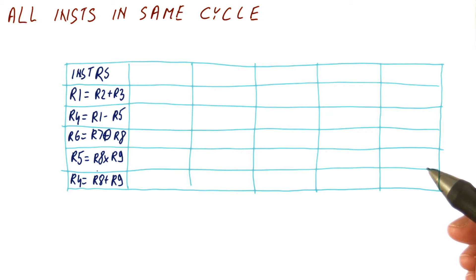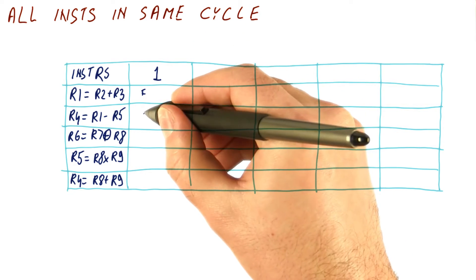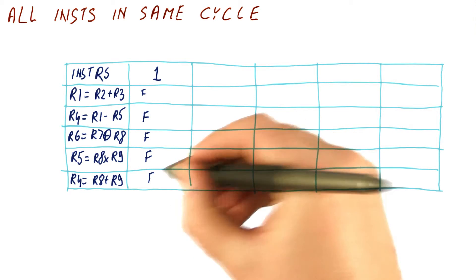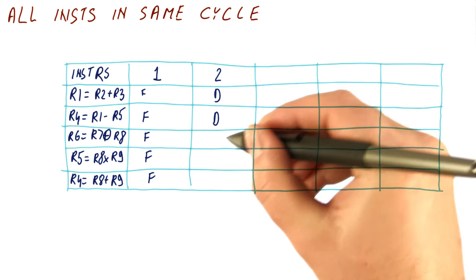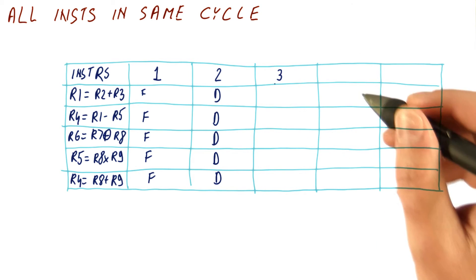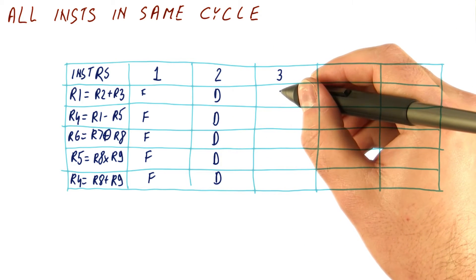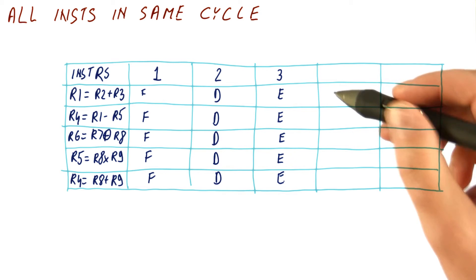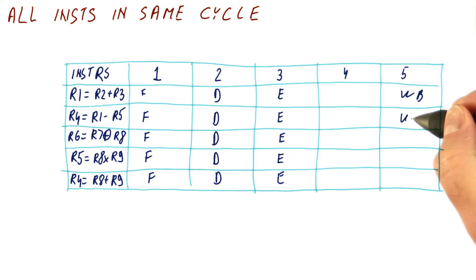Let's see what happens in a pipeline when we do this for a five-stage pipeline. In cycle one, each of the five instructions will be fetched. In cycle two, we decode and read registers for each. Then the time comes to execute these things — if we just get all five of them and execute them, we will have a very good CPI. Eventually we write the results for all of them, and if we had more instructions it wouldn't matter. All of this would be done in basically five cycles.